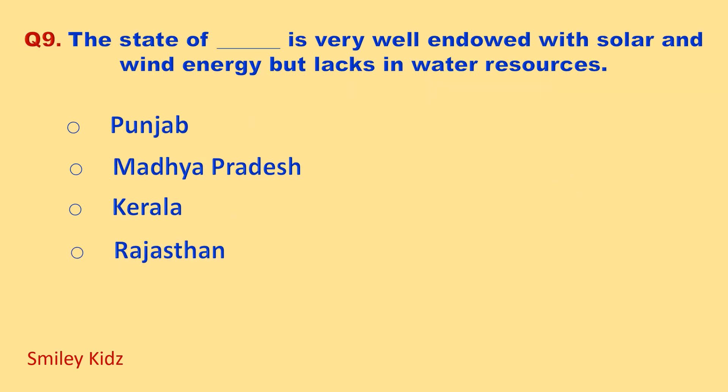Next question on the screen. The state of which is very well endowed with solar and wind energy but lacks in water resources? Your options are: Punjab, Madhya Pradesh, Kerala, Rajasthan. Your time starts now.